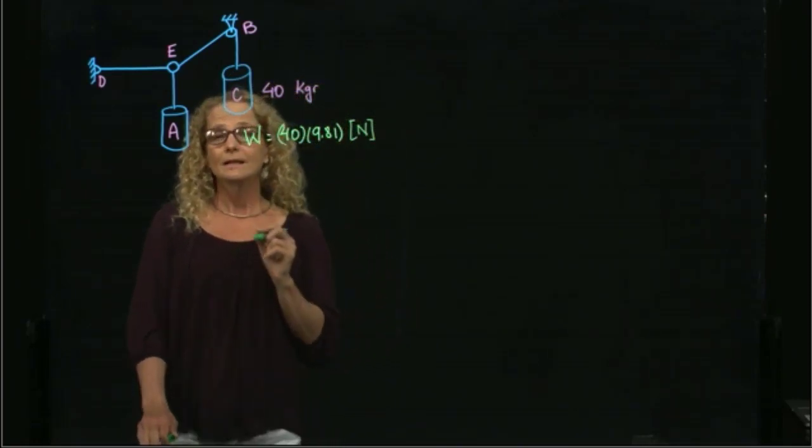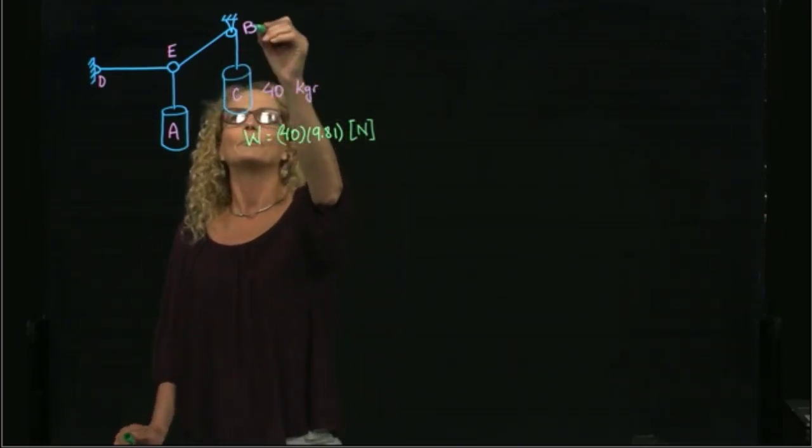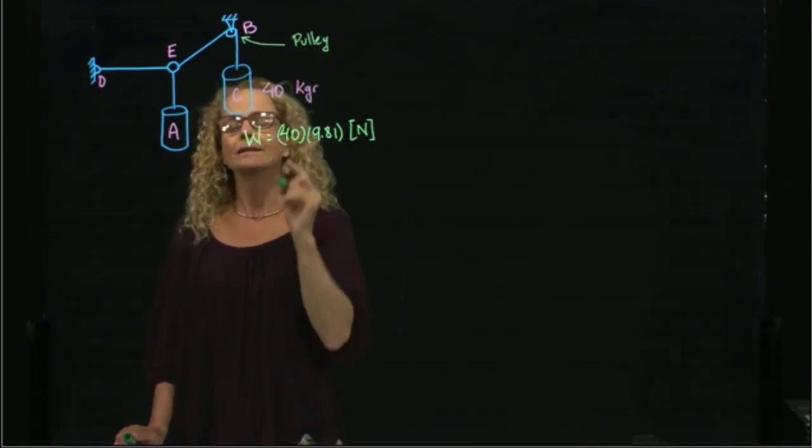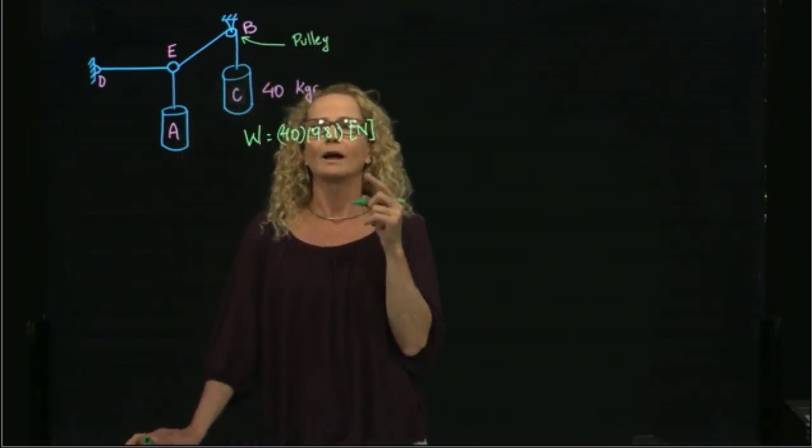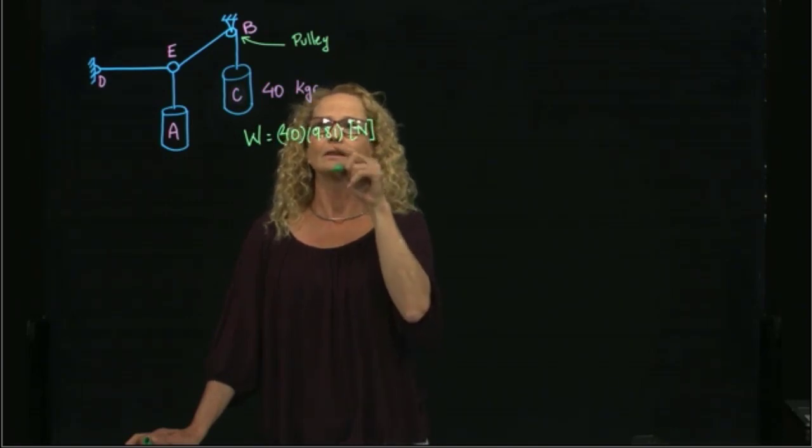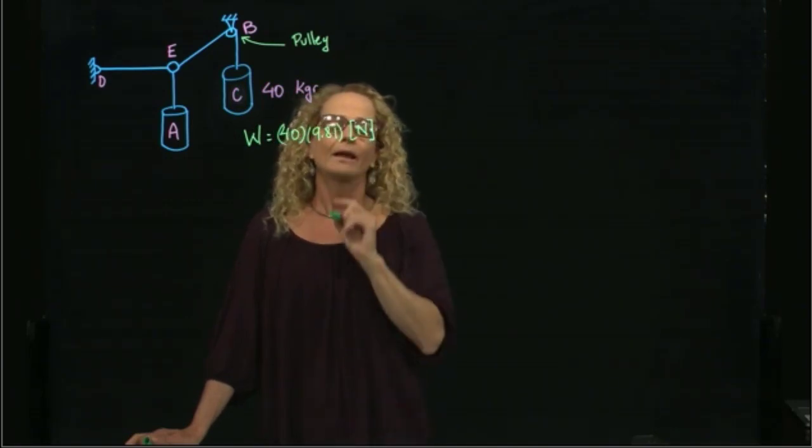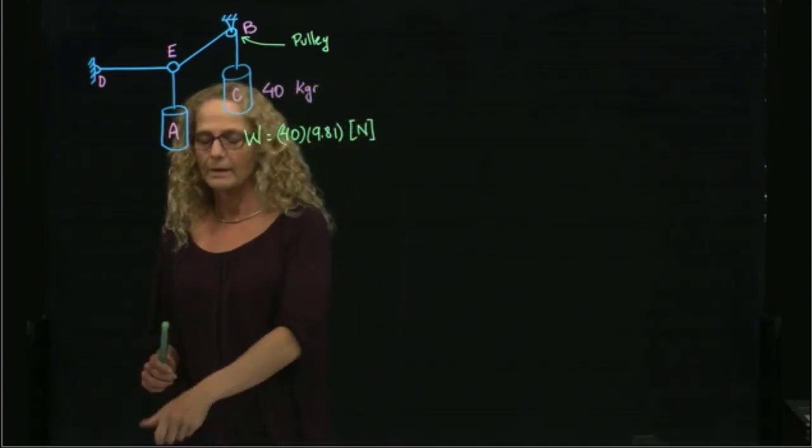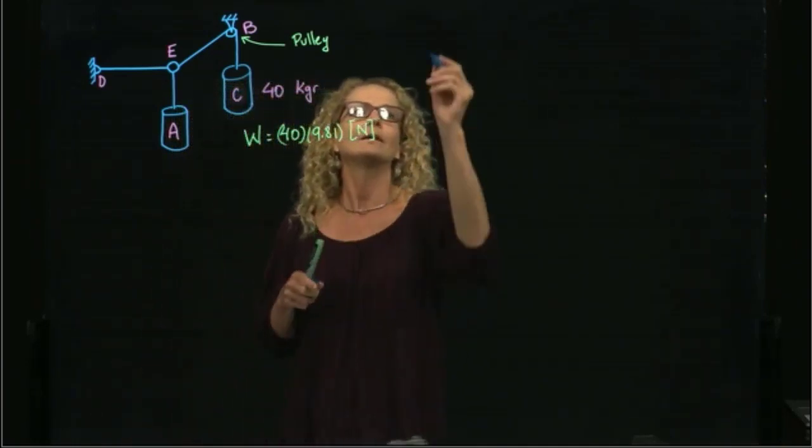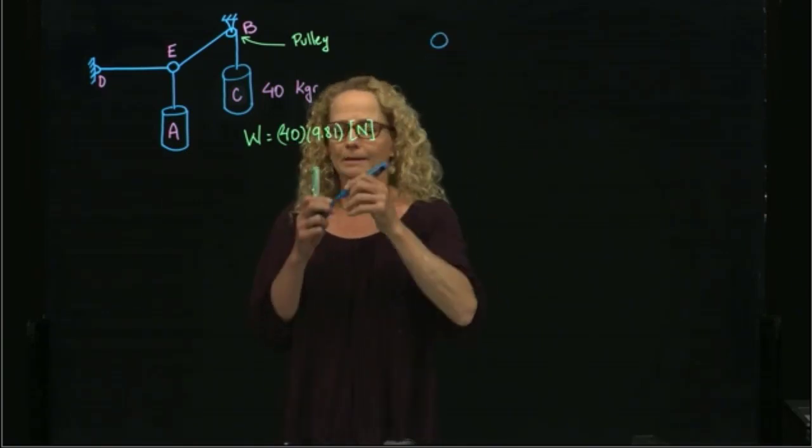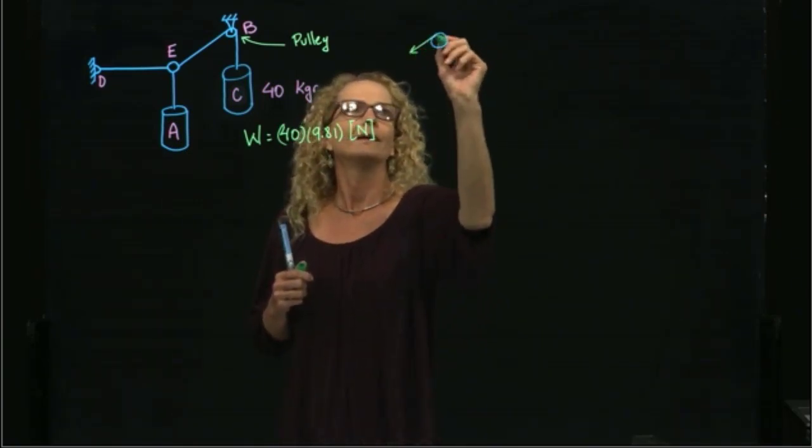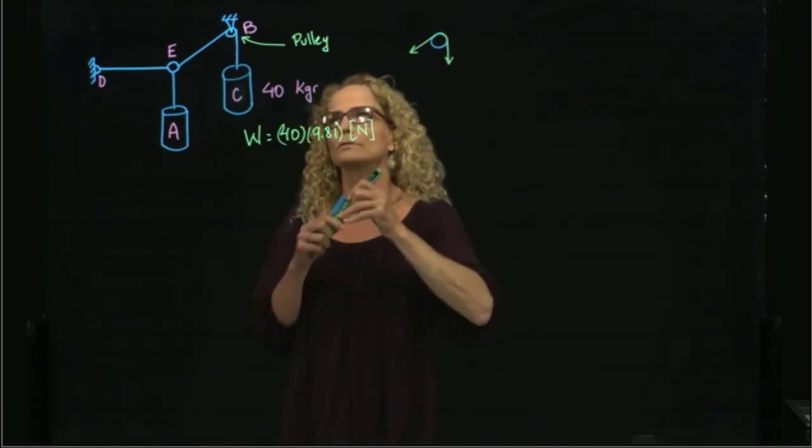The other thing that we notice is that this is a pulley, and it is an ideal pulley. So that pulley does not have any mass, and the size is negligible, and is frictionless. Therefore, the two tensions, so if I have this pulley over here, the tension of this rope will be exactly the same as the tension of this rope.